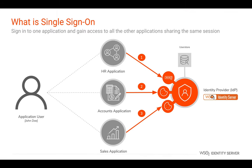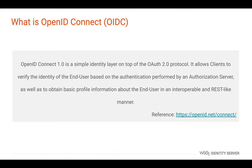Let's begin by briefly understanding what single sign-on is. Single sign-on, most commonly known as SSO, enables users to provide their credentials once and obtain access to multiple applications. This enables users to sign into one application and gain access to all other applications that share the same session. For more information on SSO, watch our WSO2 Identity Server single sign-on training video.